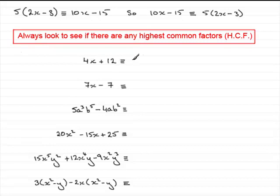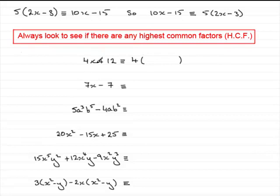So we put that highest common factor out front. As for letters, we've got an x in this term but not in the other, so there are no common letter factors — it is just simply 4. So we put a bracket, and we need two terms inside so that when we multiply the 4 by each of them we get 4x plus 12. 4 times x gives 4x, so we put x there. And what do you multiply 4 by to give plus 12? It's going to be plus 3. So we have 4 bracket x plus 3.